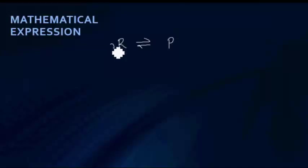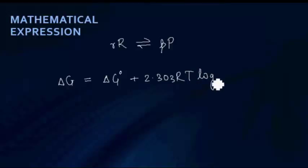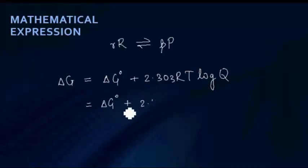If you have a reversible chemical reaction going from reactants to products, where stoichiometry is given for the balanced chemical equation, then we can define a term called change in Gibbs free energy. Delta G, the change in Gibbs free energy of the reaction, is equal to delta G naught plus 2.303 RT log Q, where the base of log is 10. Equivalently, this can be written as delta G naught plus RT ln Q, where ln means the base of log is E.